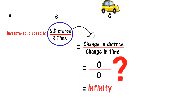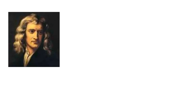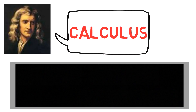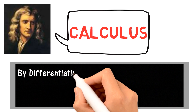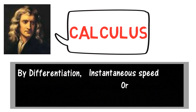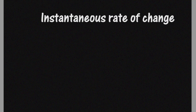This was a problem of centuries and had no solution. It was Newton who later solved this problem by introducing calculus. By the differentiation method we can now find the instantaneous speed, or any instantaneous rate of change of two values.